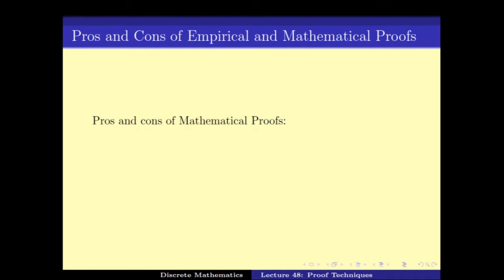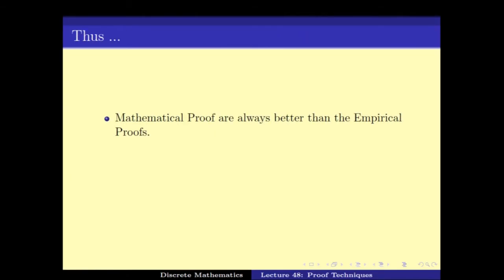On the other hand, for the mathematical proofs, the advantage is that it is 100% accurate, there is no chance of error in the deduction. But the downside is that it is hard to prove, it is not the easiest thing to prove. Mathematical proofs are always better than empirical proofs because it is 100% accurate, if we can get it. And we will always like to have a mathematical proof.